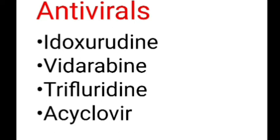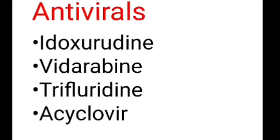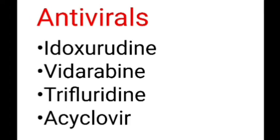Coming to the antivirals — antivirals are purine or pyrimidine analogues that are incorporated into the viral DNA, thereby leading to formation of abnormal viral DNA and inhibiting replication of the virus. There are four types: idoxuridine, vidarabine, trifluridine, and acyclovir.